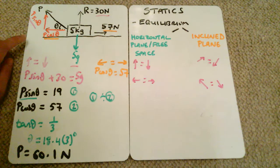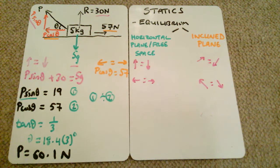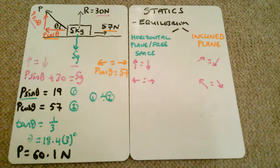We've resolved forces into horizontal and vertical components for a particle on a horizontal plane, applied up equals down and left equals right, and used simultaneous equations to find both P and theta. We're now going to look at our final example on inclined planes.